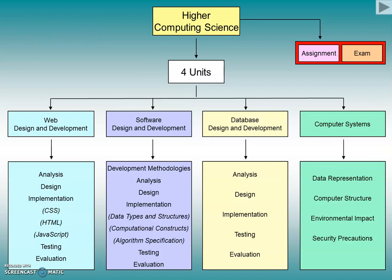Here is the course for Higher Computing Science, which fundamentally is the same as the National 5 course. We have four units: the web, software and database design and development units, and also the computer systems unit. The web, software and database follow the same sequence as in National 5 — we have analysis, design, implementation, testing and evaluation for each of them. And in computer systems we've still got data representation, computer structure, environmental impact and security precautions.